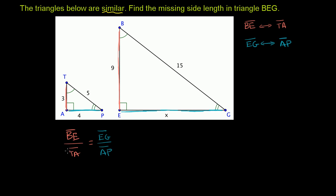And we know the length of BE is equal to 9, they give us that. And we know that TA is equal to 3. So 9 over 3 has got to be equal to EG over AP.